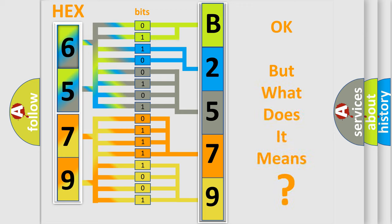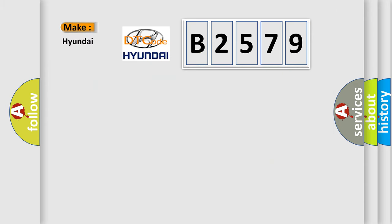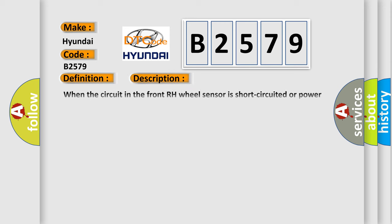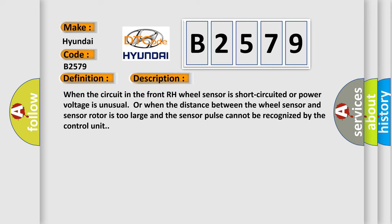The number itself does not make sense if we cannot assign information about what it actually expresses. So, what does diagnostic trouble code B2579 interpret specifically for Hyundai car manufacturers? The basic definition is ABS RF wheel speed sensor. When the circuit in the front RH wheel sensor is short circuited, or power voltage is unusual, or when the distance between the wheel sensor and sensor rotor is too large and the sensor pulse cannot be recognized by the control unit.